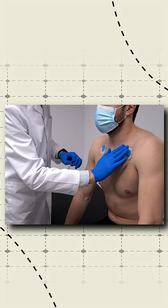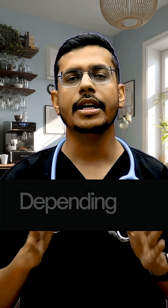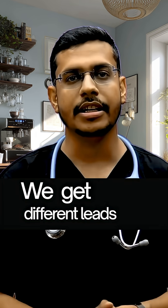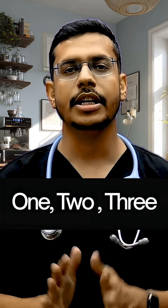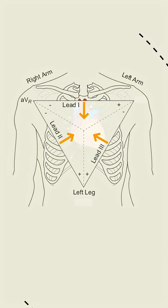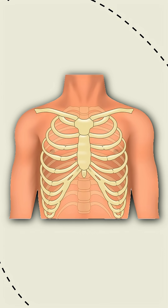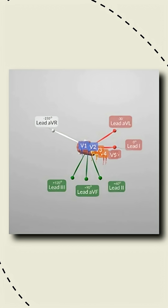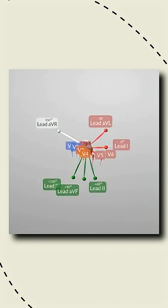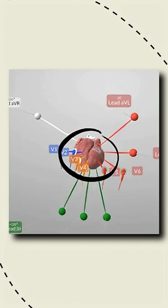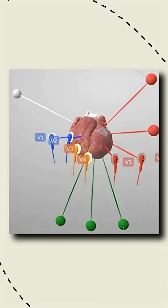We place electrodes on the skin, and depending on where we record, we get different leads. Limb leads 1, 2, 3, AVR, AVL, AVF look at the heart from different angles. Chest leads V1 to V6 give a horizontal view. Together they form a 12-lead ECG, which is like a 3D picture of the heart's electrical activity.